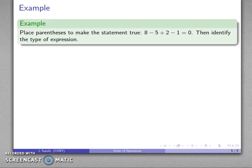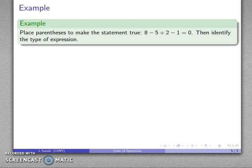Let's try that. Let's place parentheses so that we can make our statement true: 8 minus 5 plus 2 minus 1 equals 0, and then we should identify the type of expression. Maybe there's no parentheses at all. Because addition and subtraction are equiprecedent, I'm going to evaluate them from left to right. That says I take care of 8 minus 5 first, that's 3. 3 plus 2 is 5. 5 minus 1 is 4. That's not equal to 0. So I know there have to be parentheses in here if the statement is actually going to be true.